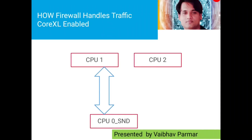SND needs to run on a core, so we can manually assign a core to the SND, or the firewall algorithm automatically assigns a core to it. When traffic enters the NIC, it is directed to a processing core running SND. The SND then makes the decision on which core the traffic should be forwarded to. This same process happens for the rest of the packets, and the processing speed of packets is significantly increased.